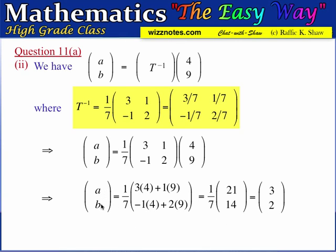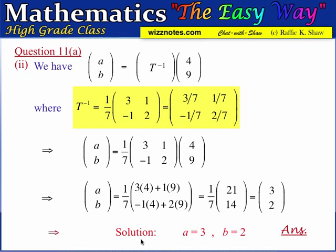Therefore the matrix [A, B] equals [3, 2], so A equals 3 and B equals 2. That is the answer for that part.